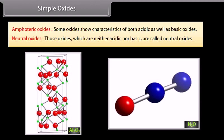Neutral oxides: Those oxides which are neither acidic nor basic are called neutral oxides. For example, CO, NO, N2O and H2O.